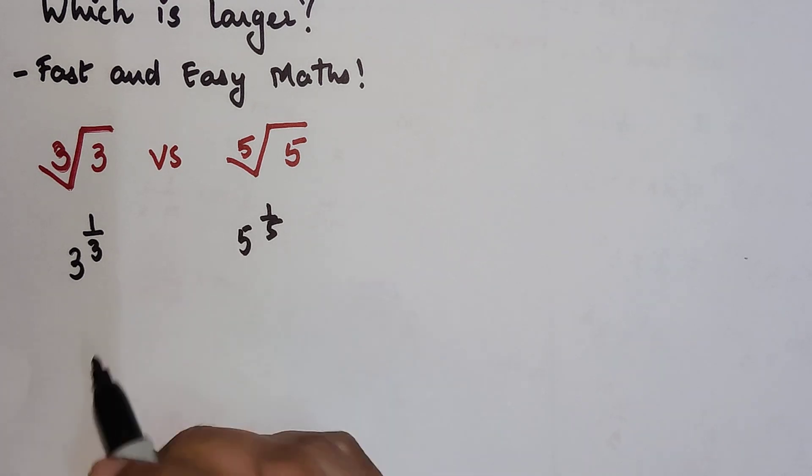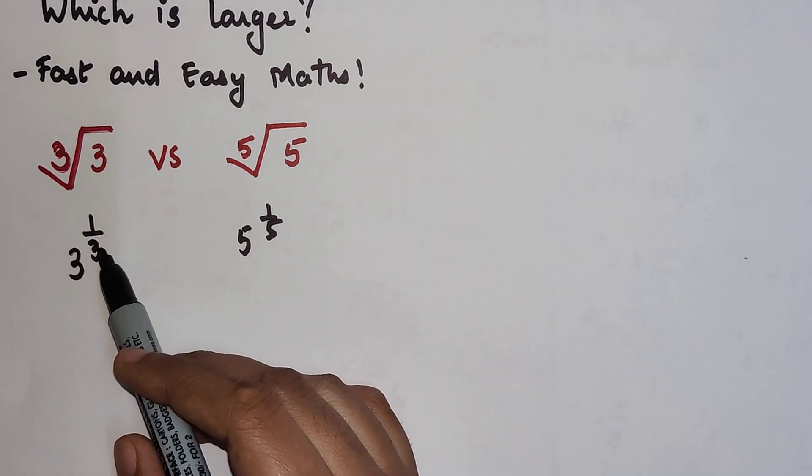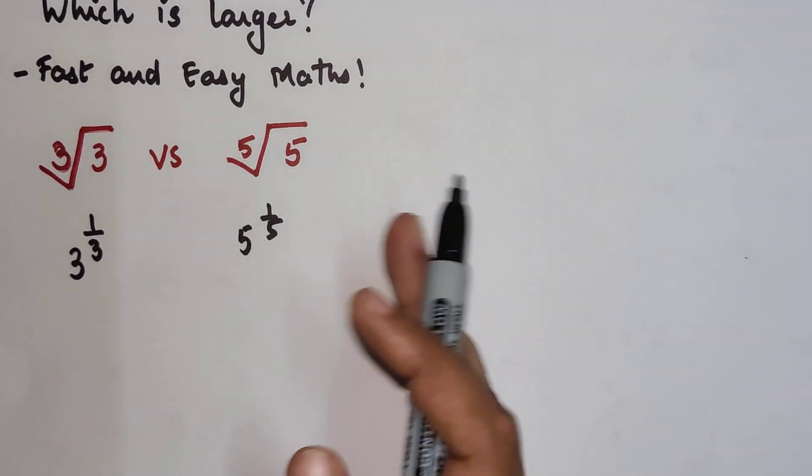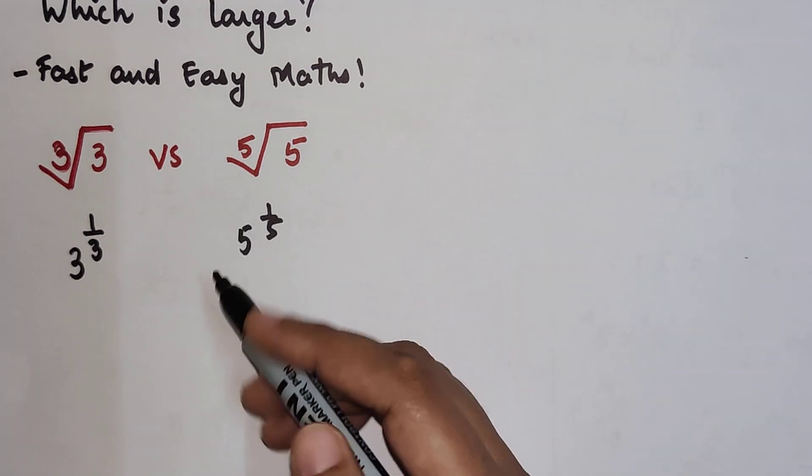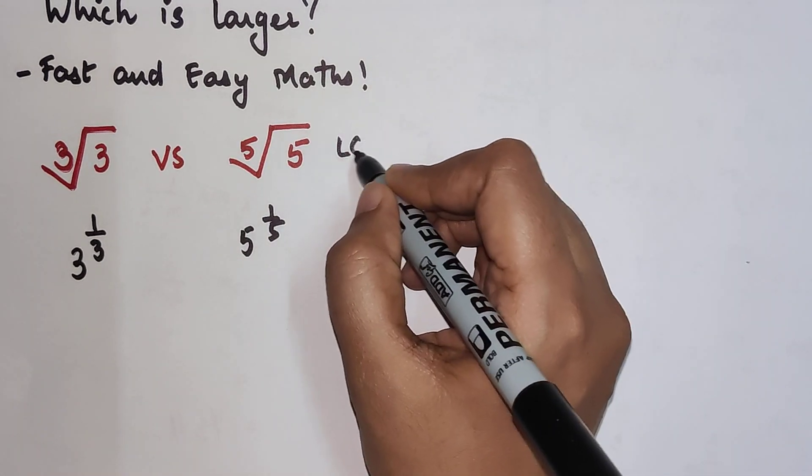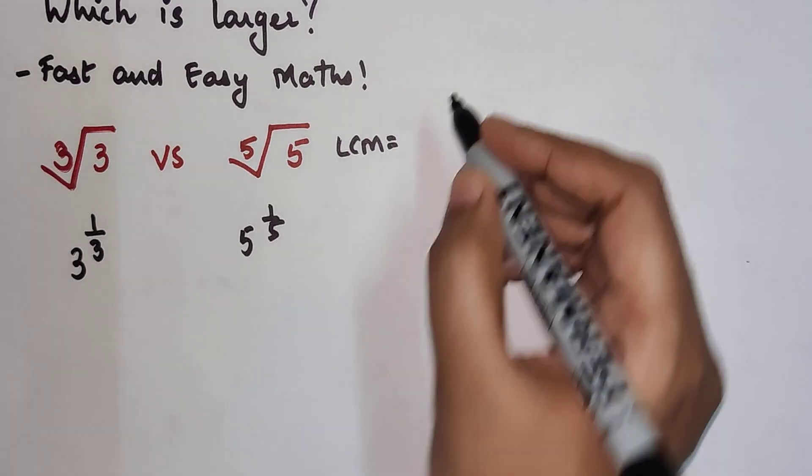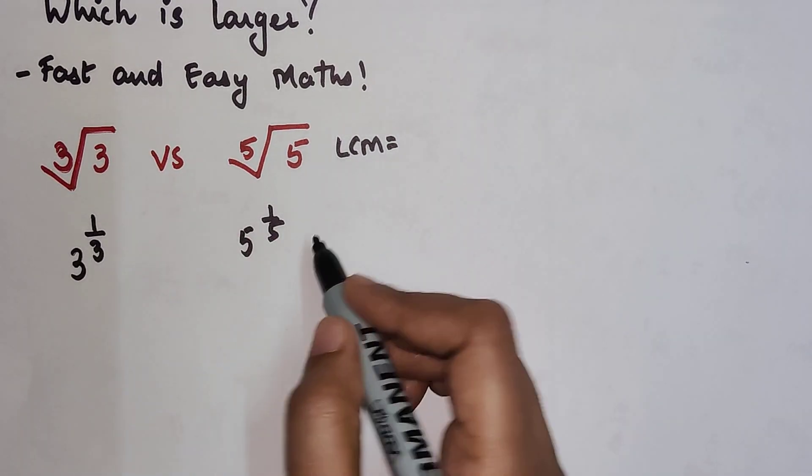Now the next thing you have to do is try to make the exponents the same. How are you going to do that? You are going to take the LCM of the exponents, that is 1 upon 3 and 1 upon 5.